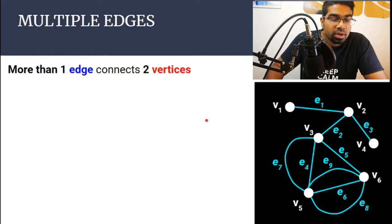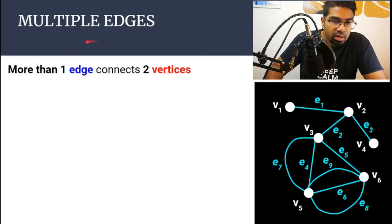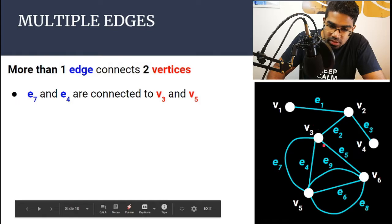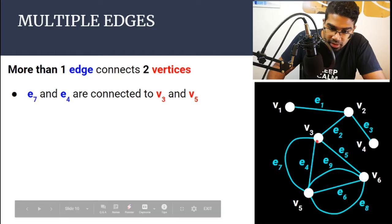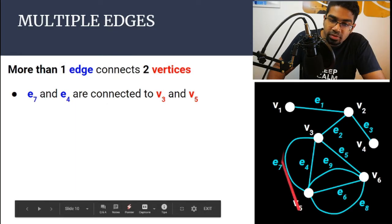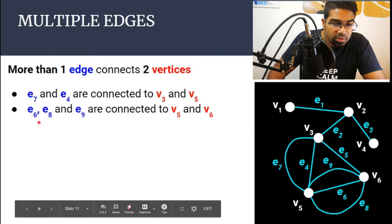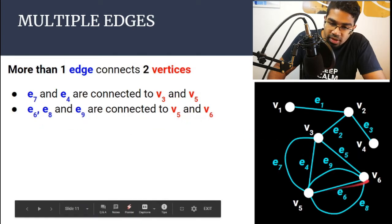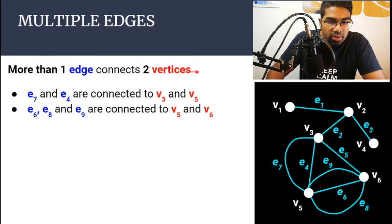Simple and non-simple graphs. To understand whether a graph is simple or not, we need to understand multiple edges and loops. Multiple edges are when more than one edge connects two vertices. Looking at V3 and V5: E4 is an edge connecting V3 to V5, and E7 is also an edge connecting V3 to V5 — there are two edges connecting the same pair of vertices. This is known as multiple edges. Similarly, V5 and V6 have E6, E9, and E8 connecting them. As long as there is more than one edge connecting two vertices, this is multiple edges.